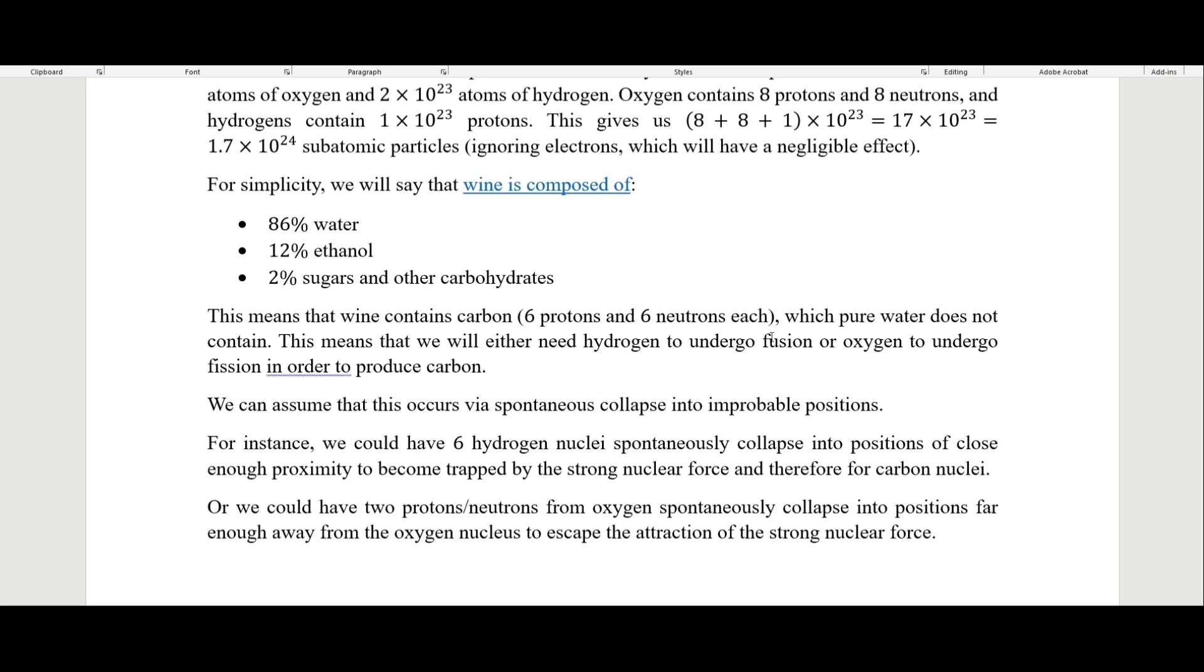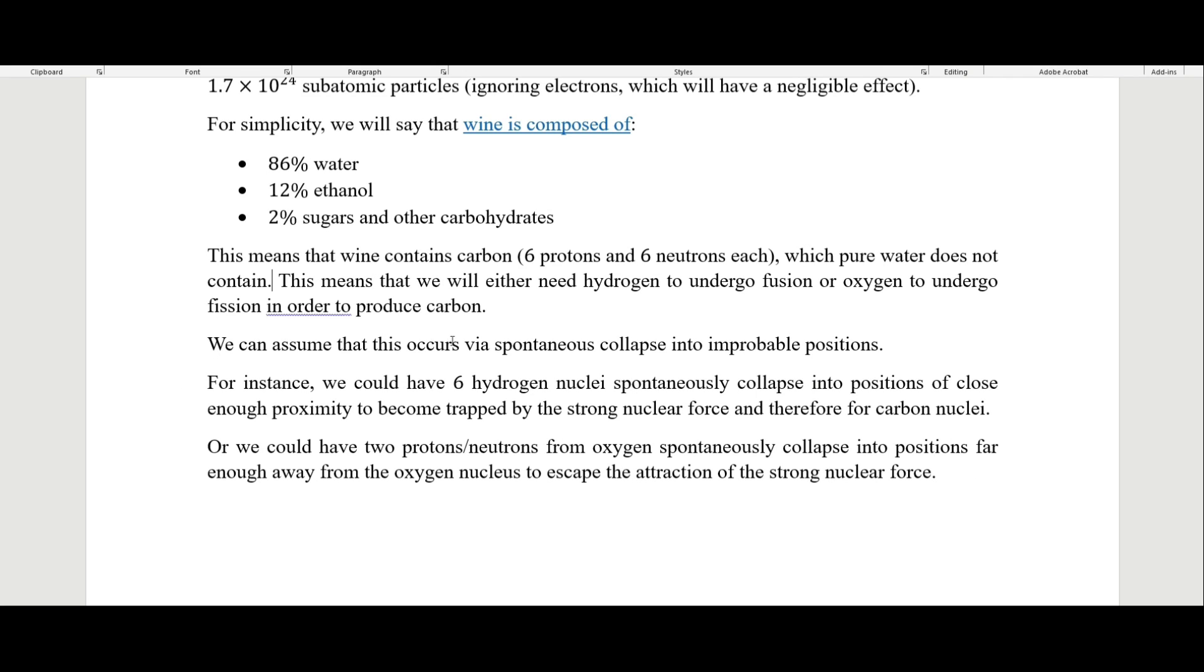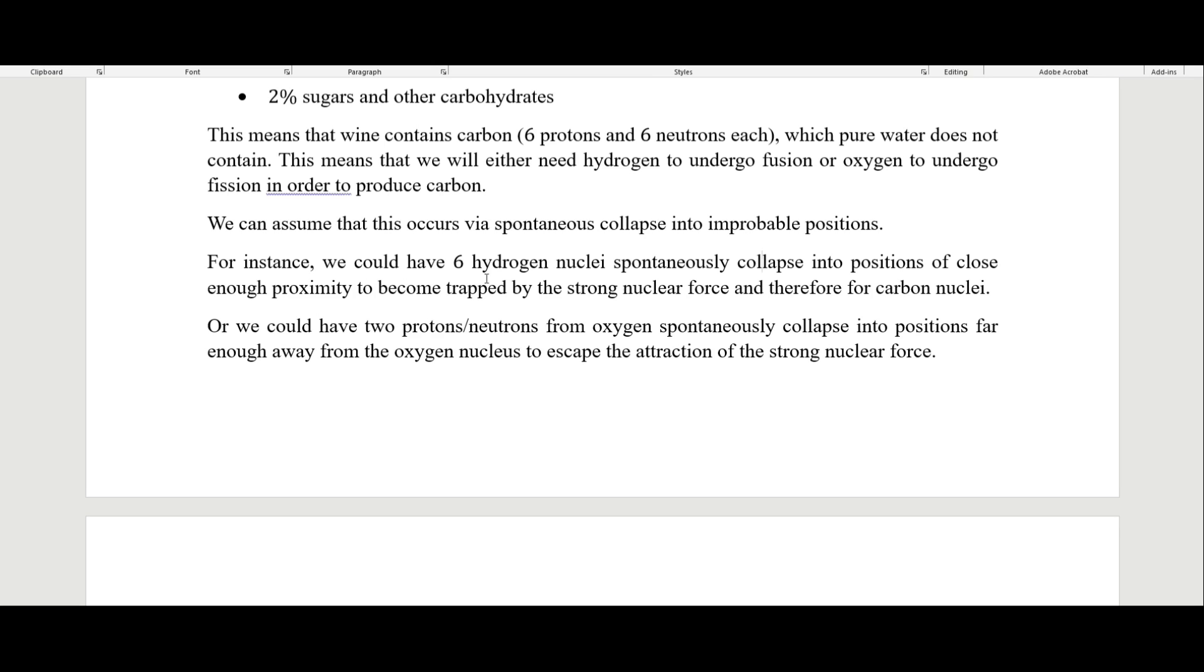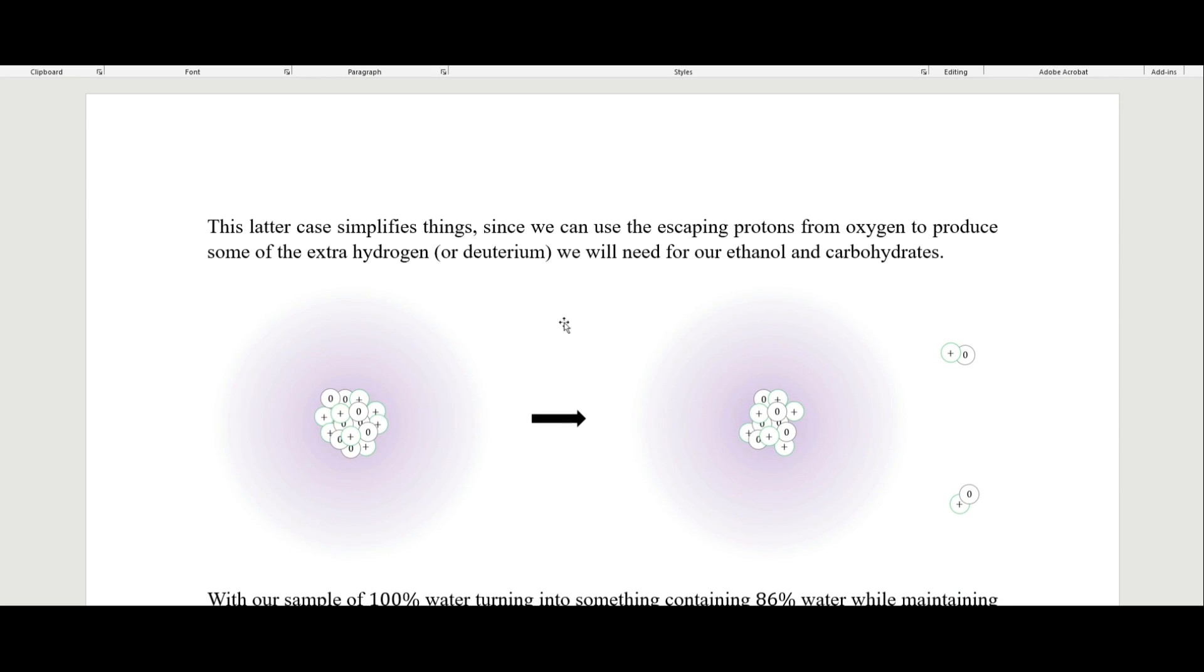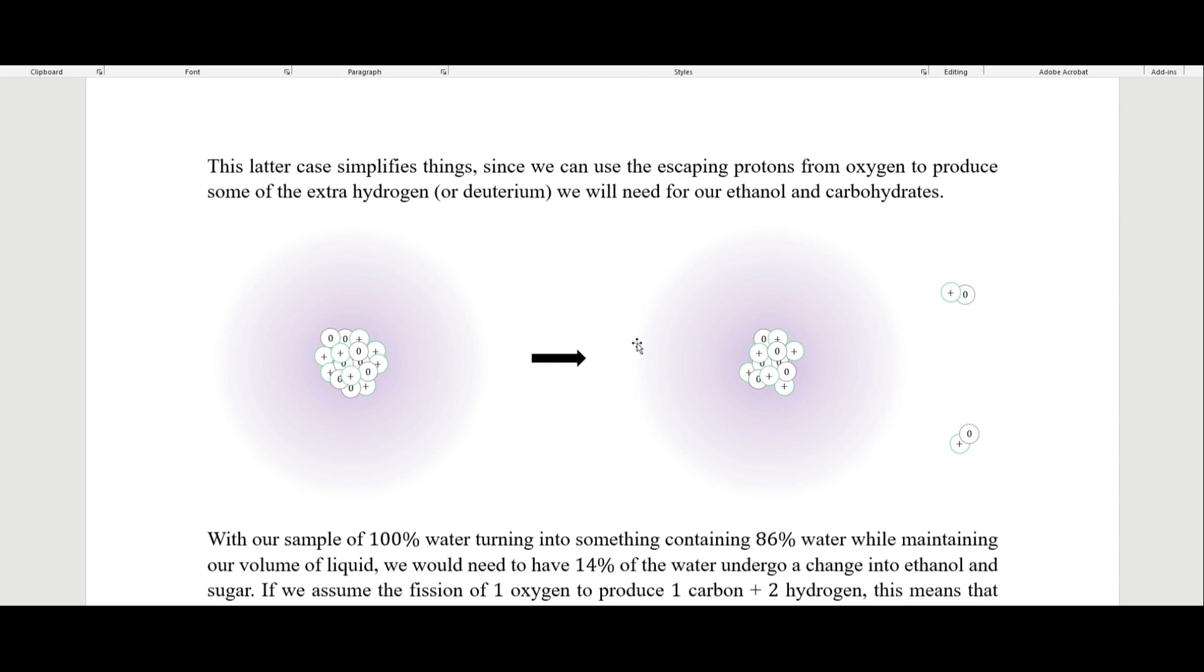This means that we will either need hydrogen to undergo fusion, or oxygen to undergo fission in order to produce carbon. We can assume that this occurs via spontaneous collapse into improbable positions. For instance, we could have 6 hydrogen nuclei spontaneously collapse into positions of close enough proximity to become trapped by the strong nuclear force and therefore form carbon nuclei. Or we could have the protons and neutrons from oxygen spontaneously collapse into positions far enough away from the oxygen nucleus to escape the attraction of the strong nuclear force.